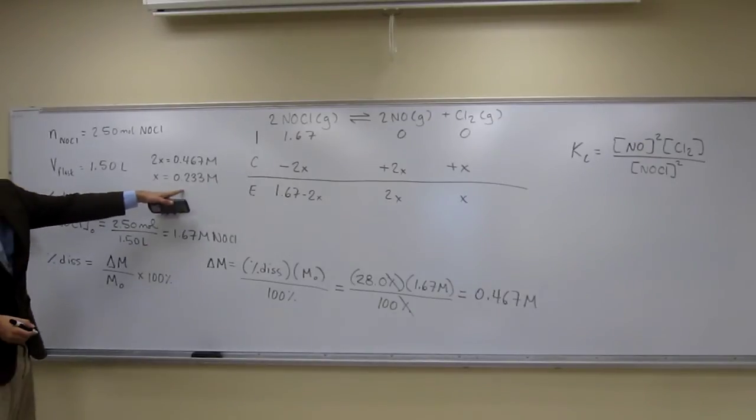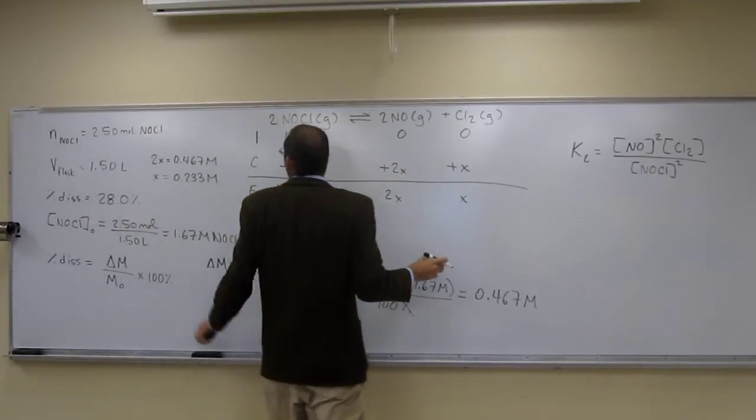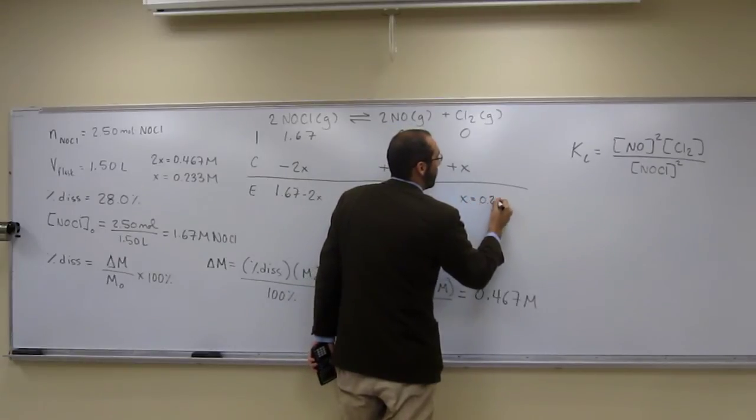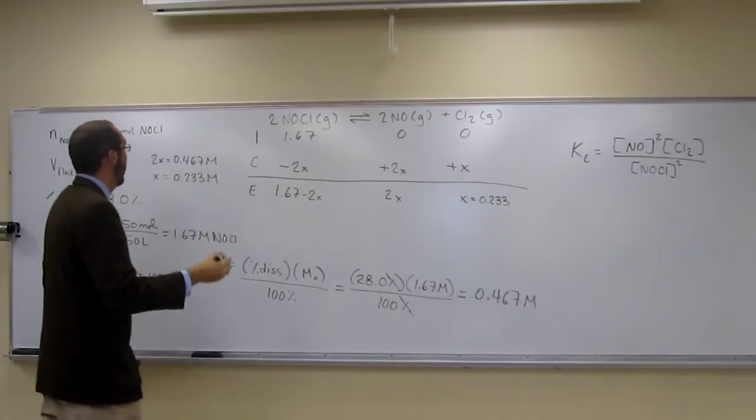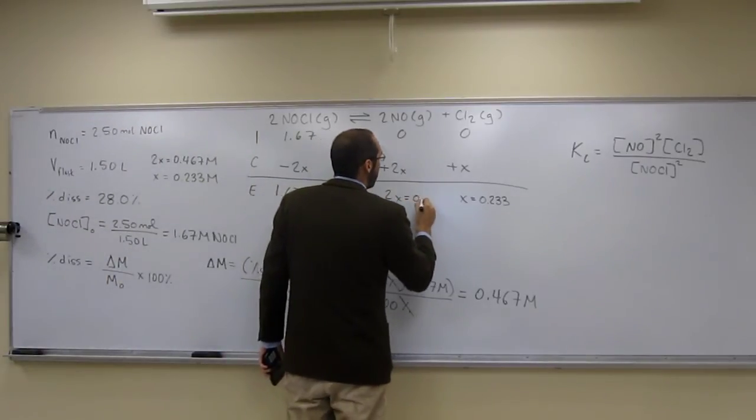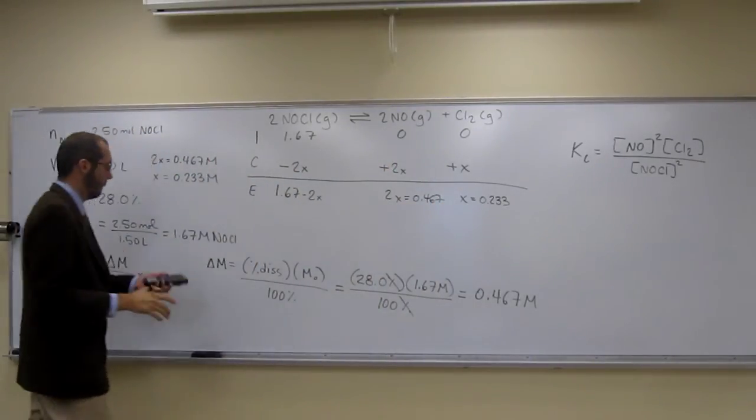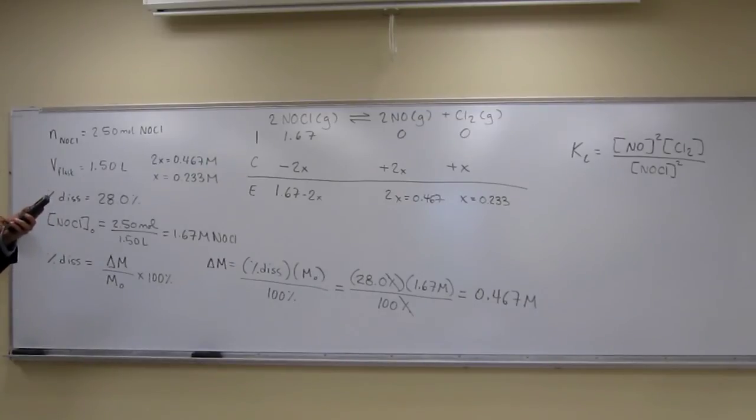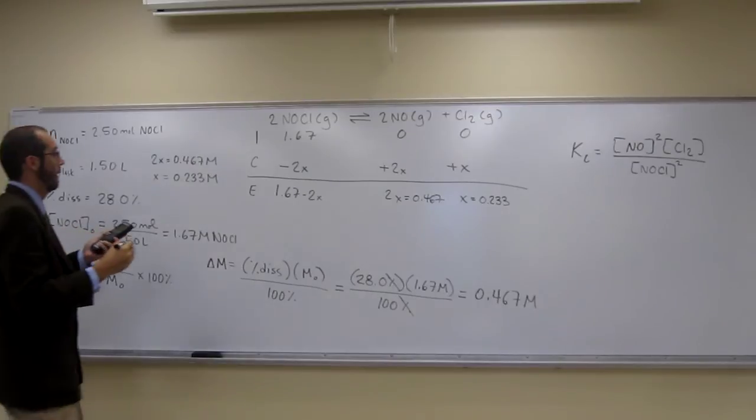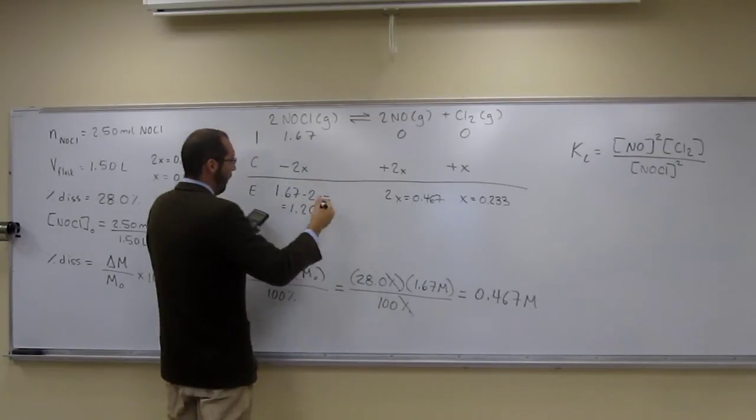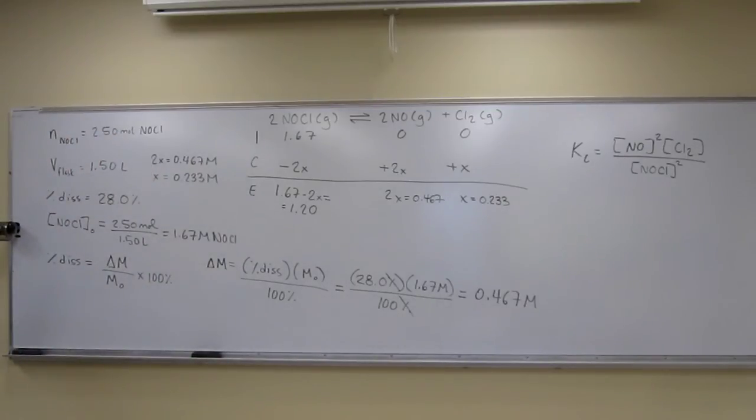So what did we say? Well, x equals 0.233. So can I just replace that? 0.233. 2x, well, we know what that equals. 0.467 molar. And then 1.67 minus 2x, well let's do that. 1.67 minus 2x, and it's going to be 1.220. Is everybody okay with that? There's some more significant figures that it gives on your calculator, but I'm just going to go over there.